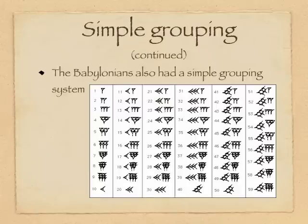The Babylonians also, at one point, had a simple grouping system. Notice in the left column, we're counting up to ten just by putting more and more marks on the page until we have nine of these symbols standing for nine. But then when we jump to ten, we have a new symbol.